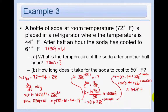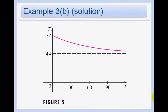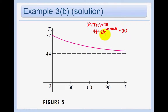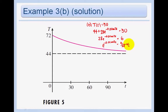In part b, how long does it take for the soda to cool to 50°F? We set 44 + 28e^(−0.01663t) = 50. Subtracting 44 gives 28e^(−0.01663t) = 6, so e^(−0.01663t) = 6/28. Taking the ln of both sides: t = ln(6/28) / (−0.01663) ≈ 92.6 minutes, or about 1 hour and 33 minutes.